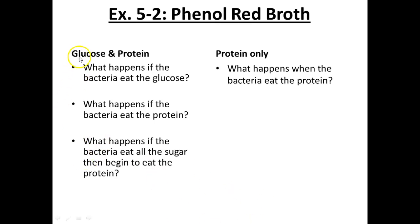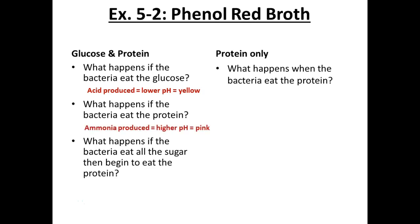Your organisms had a choice — glucose and protein. Most organisms prefer sugar first, like eating Halloween candy while the hamburger cooks. When they eat the sugar first it turns yellow, but then when they start eating the protein the pH goes in the other direction — from yellow, orange at neutral, then pink. I had to put one organism in the refrigerator because if left in the incubator, the tube was going to turn pink and you wouldn't know it had eaten the sugar first.